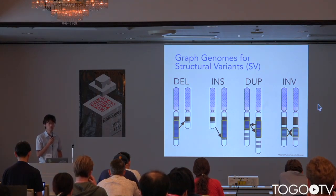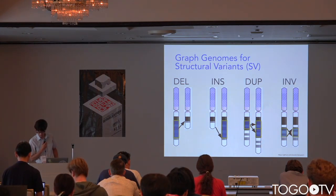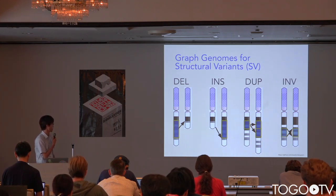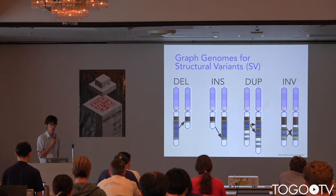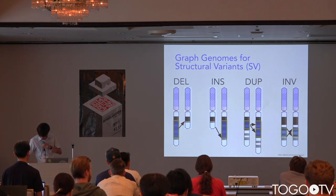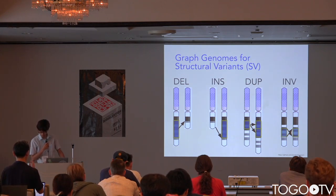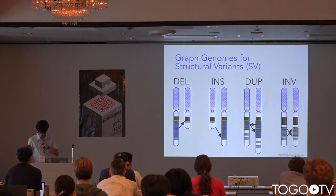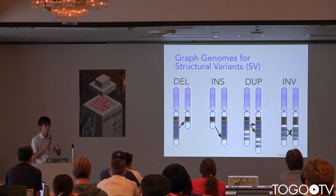Graph genomes have great potential for representing a set of genomes. I'm focusing on the evaluation of structural variants, SVs. SVs are characterized as deletions, insertions, duplications, inversions, and translocations. They are known to have substantial impact on genomic disorders or evolution, but interpretation of SVs is still difficult because existing genome browsers have limitations for visualizing large-scale or nested SVs.